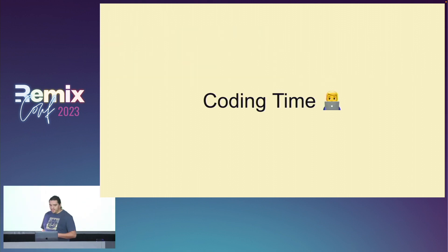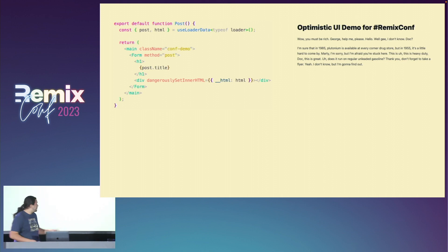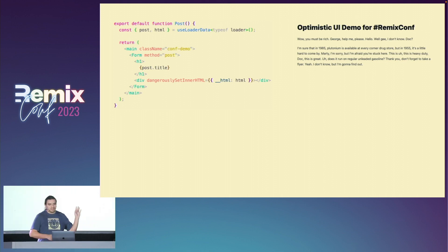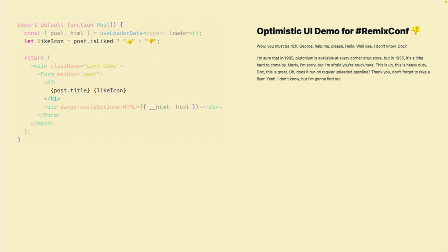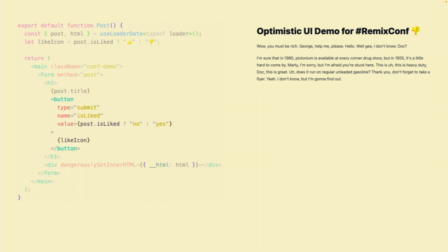So now, let's do some coding. I have some code here on the screen, and you can see the output. It's a very simple blog post. I'm using a lot of it to get the data, and we're going to add a like button. So I'll start with an emoji — it's a simple emoji — and you can see the output there. So now to make it work, I'm going to surround the icon with a button.